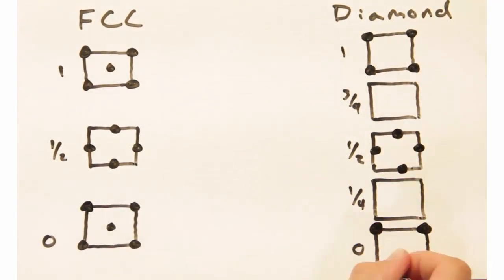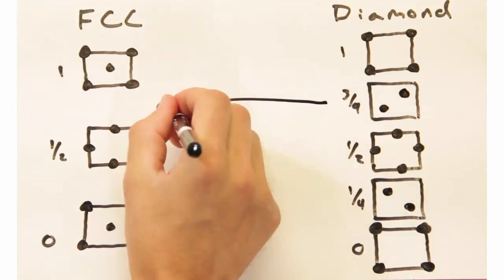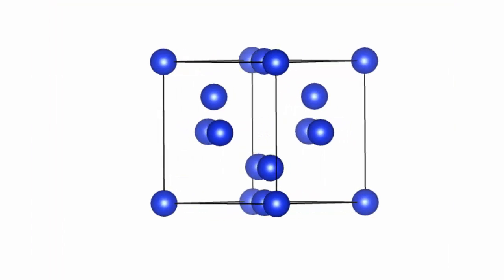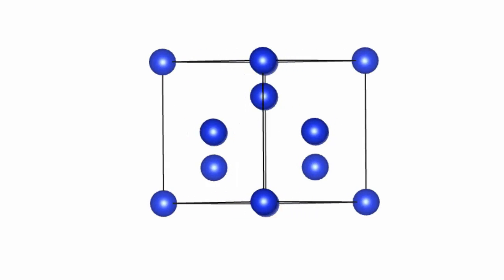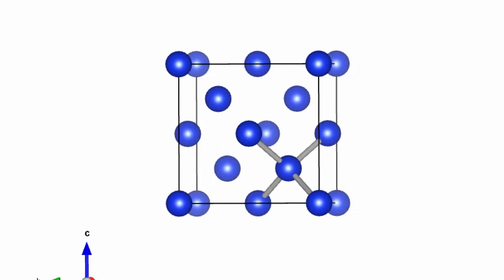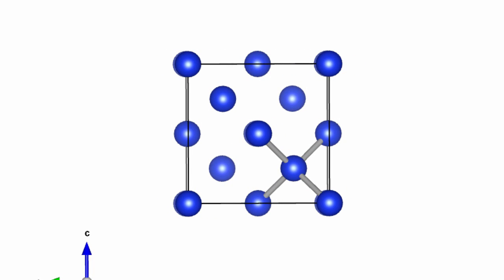Oh, the two are almost the same, except the diamond structure has these extra two slices at A3 equals a fourth and three quarters in reduced units. Now if I look back at the diamond structure in Vesta, I can see every atom has a coordination number of four, consistent with sp3 hybridization.